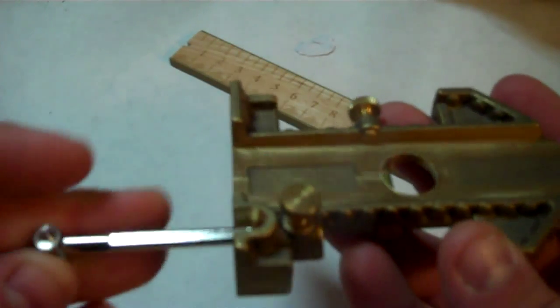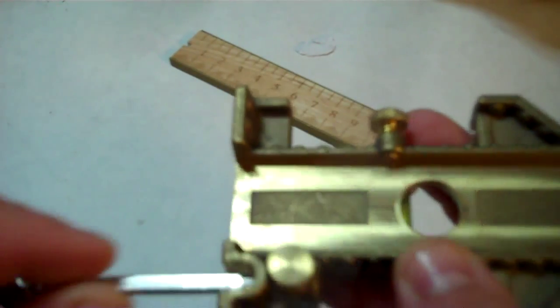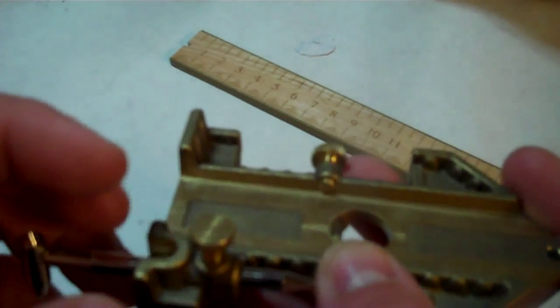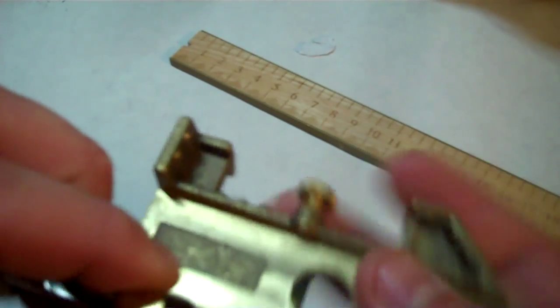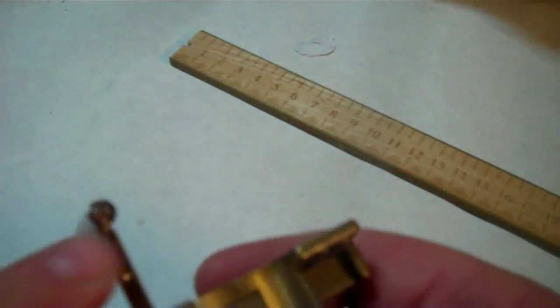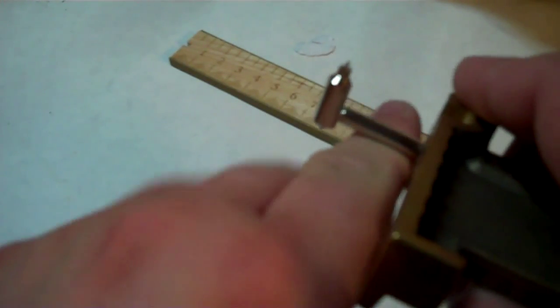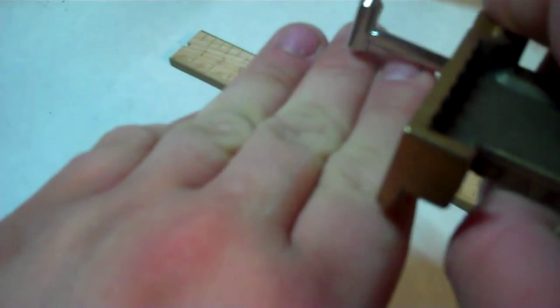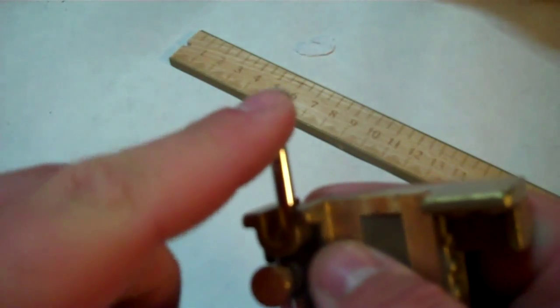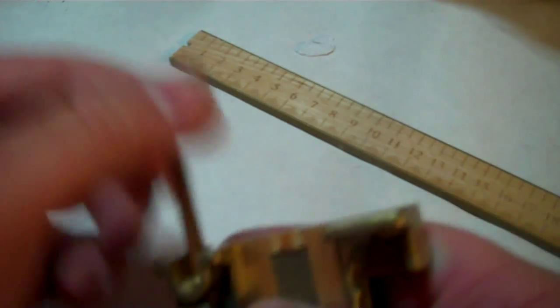Next up, let me get this back in. You got a scribe point. So say you had to make a line across the edge of a board. You put that point down and run it across the board and it will scribe a line on there for you.